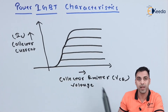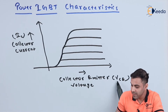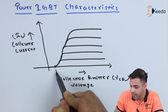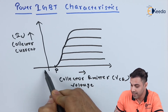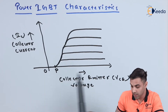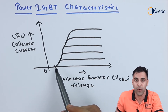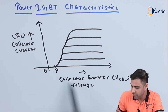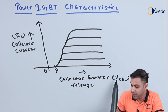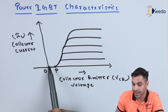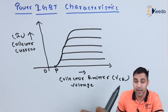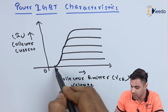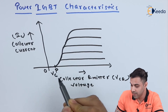As you can see, with increase in the collector-emitter voltage VCE — let this point be P and this point be O — up to point P there is no flow of collector current, meaning the power IGBT does not conduct. Even if we increase the collector-emitter voltage, there is no flow of collector current. The collector-emitter voltage has to be greater than a threshold voltage.